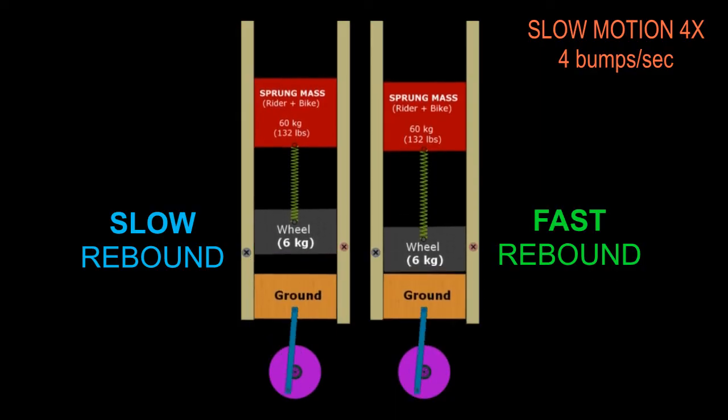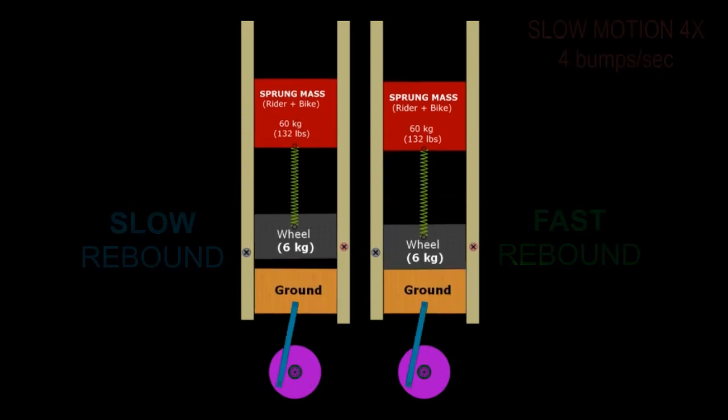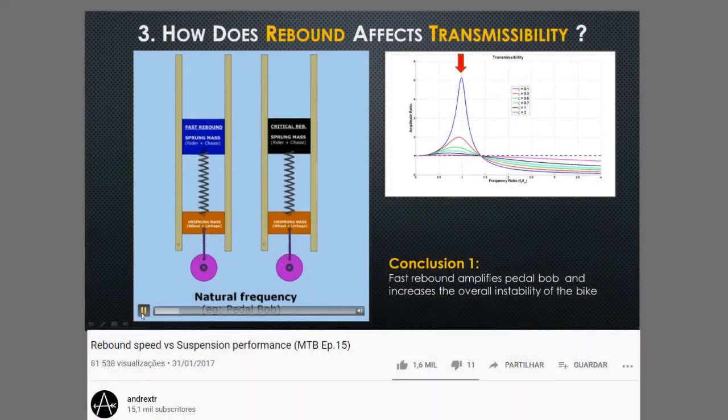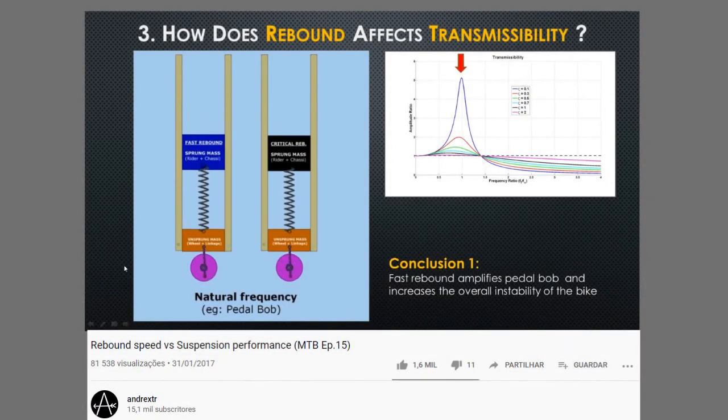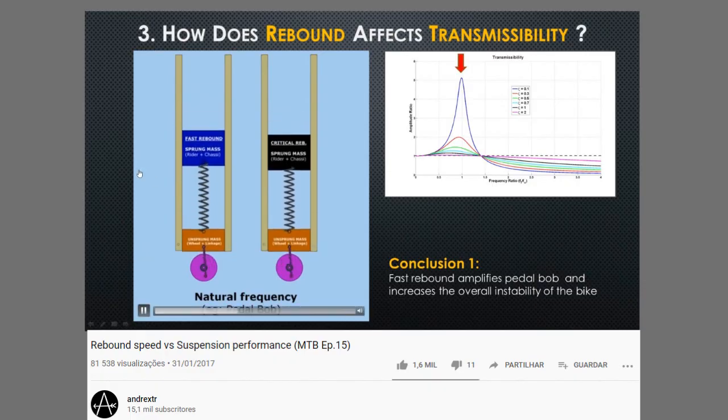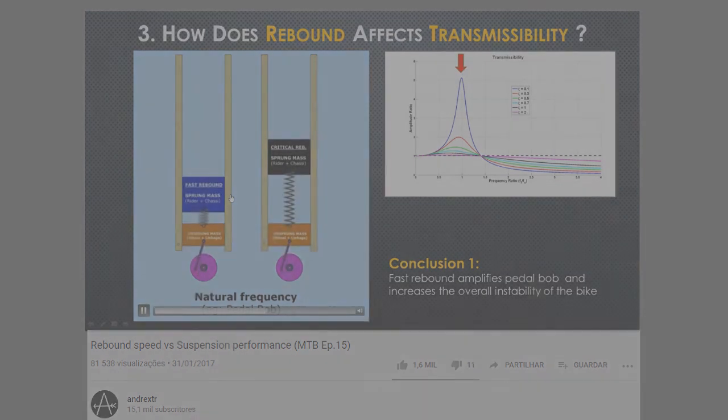But as I showed you in one of my previous videos, a very good video in my opinion, increasing the rebound speed makes the sprung mass very unstable. So basically you and the bike will bounce a lot and you get a very bouncy riding and very unstable riding.